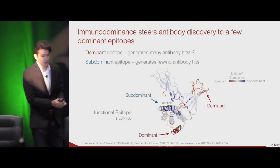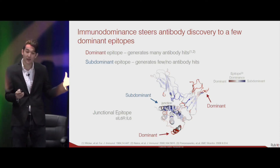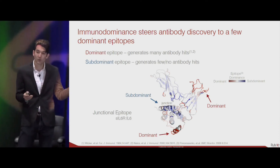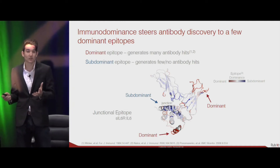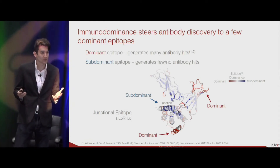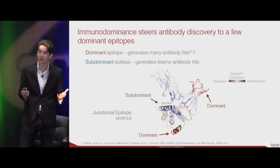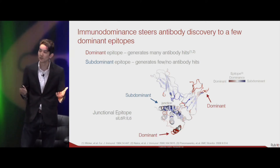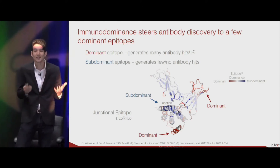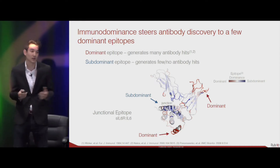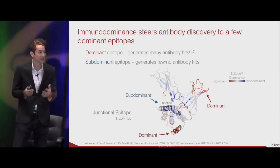In a protein, there will be certain regions — like those shown in red here — which have a higher natural propensity to bind antibodies or elicit a stronger immune response. These are called immunodominant sites. Conversely, you also have sites on a protein with a naturally weaker ability to bind antibodies, and these are called subdominant sites.